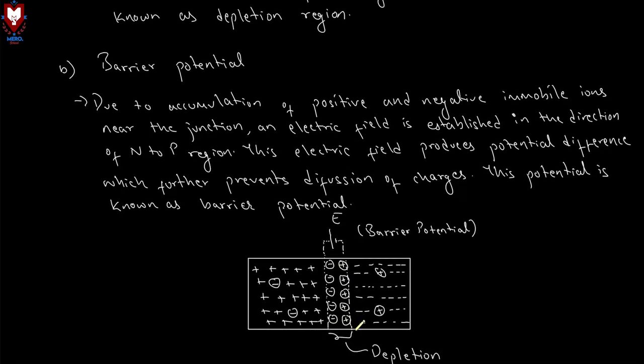In the figure, this is the depletion region, shown with positive and negative ions on either side of the junction.